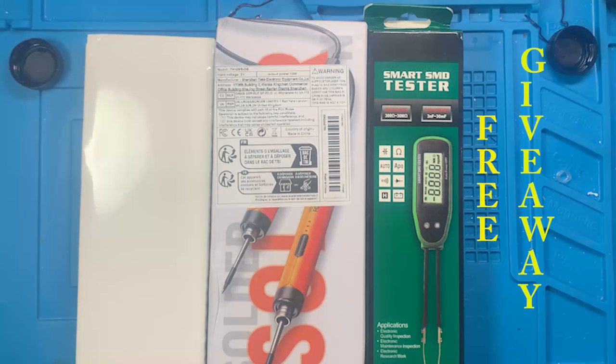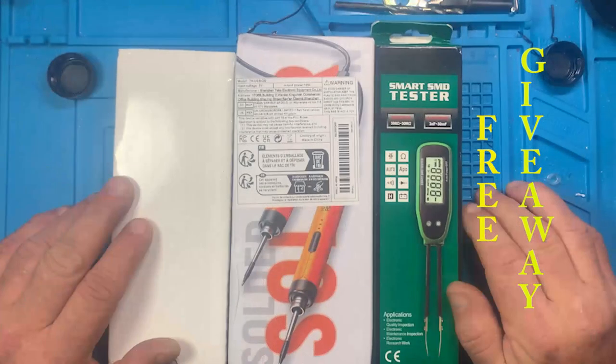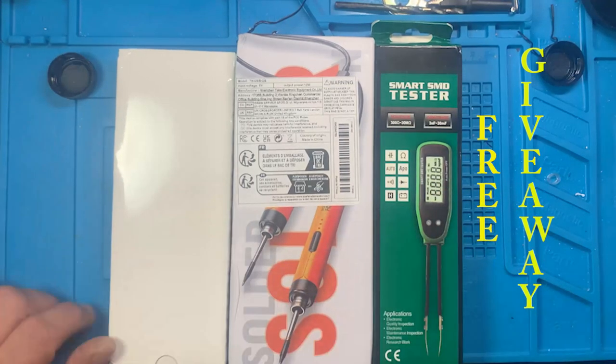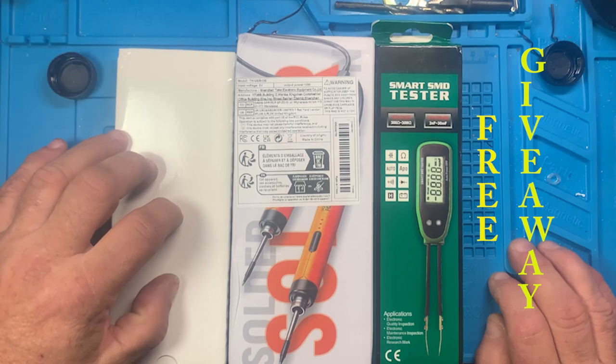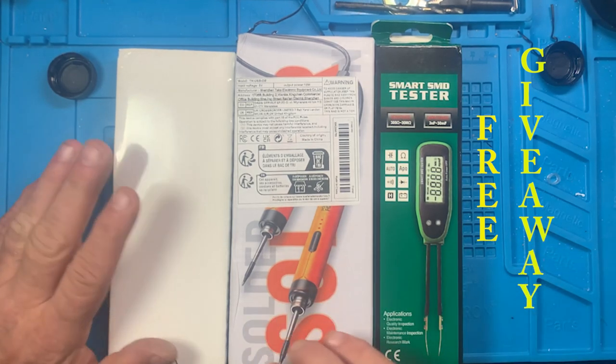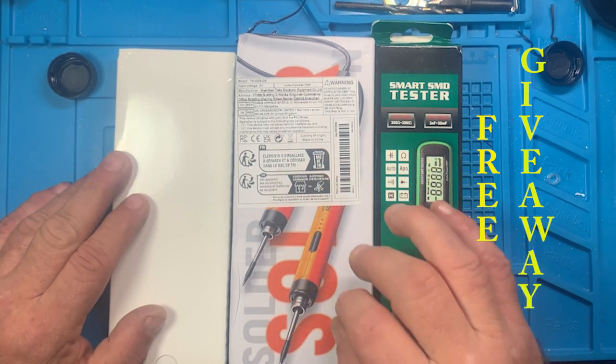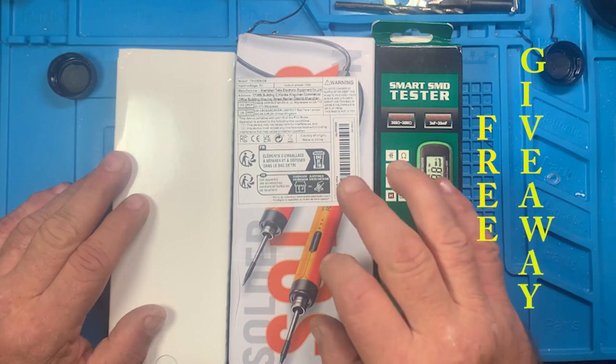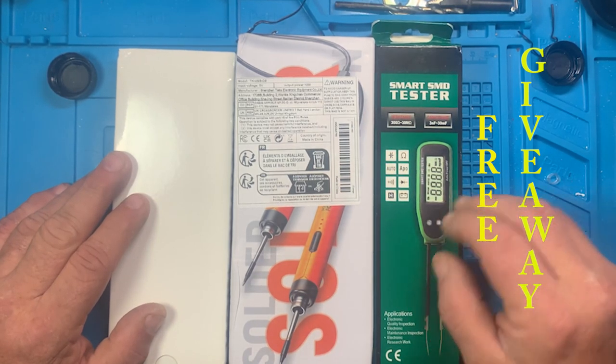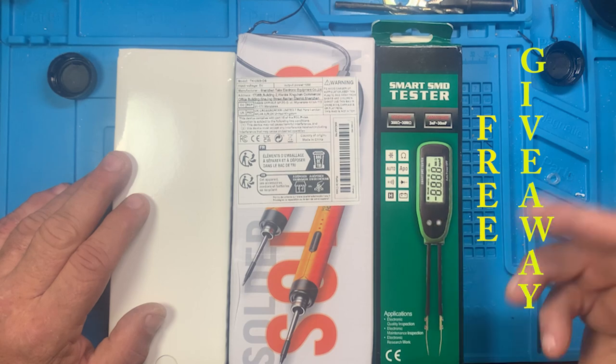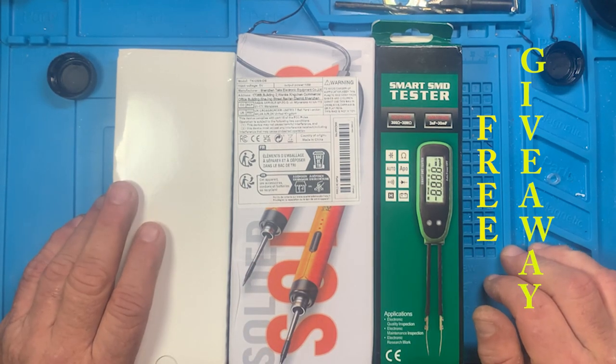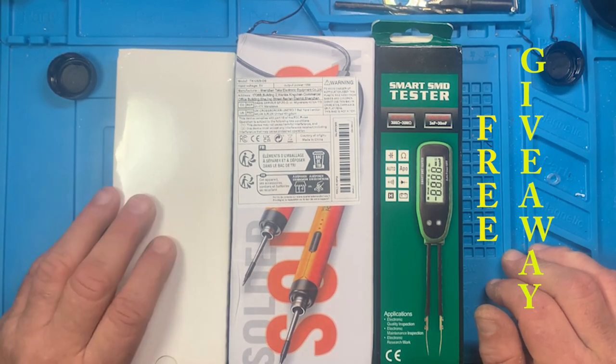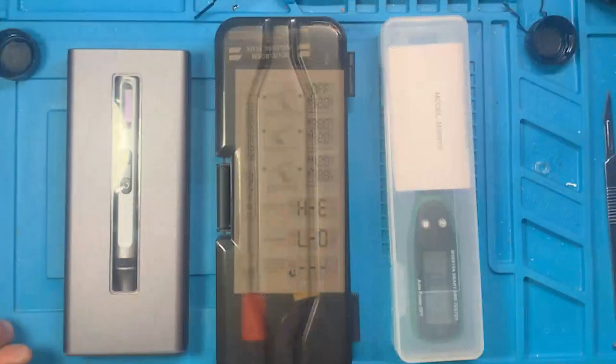Stick around and we're going to go over the details on the giveaway. Check out these three items - these are going to be the giveaway items. This is a precision micro screwdriver electric screwdriver, this is a micro soldering iron, and this is a smart SMD tester, a multimeter tweezer. Stick around and we'll go over a little bit about them and talk about the giveaway and how to get registered.